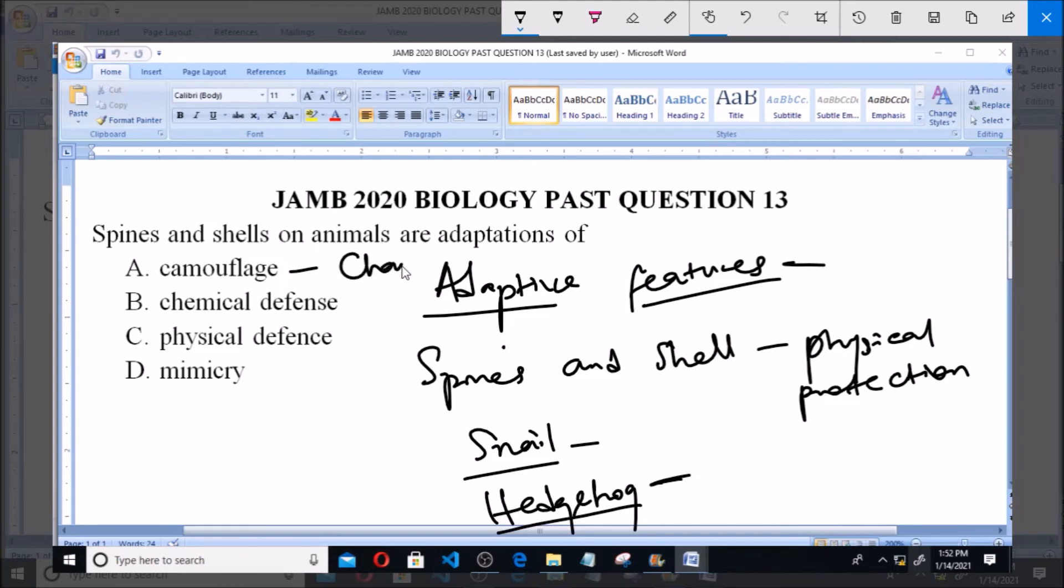Some undergo mimicry. They pretend as if they are dead, and by doing that, the predator leaves them thinking they are dead. A typical example is the millipede.